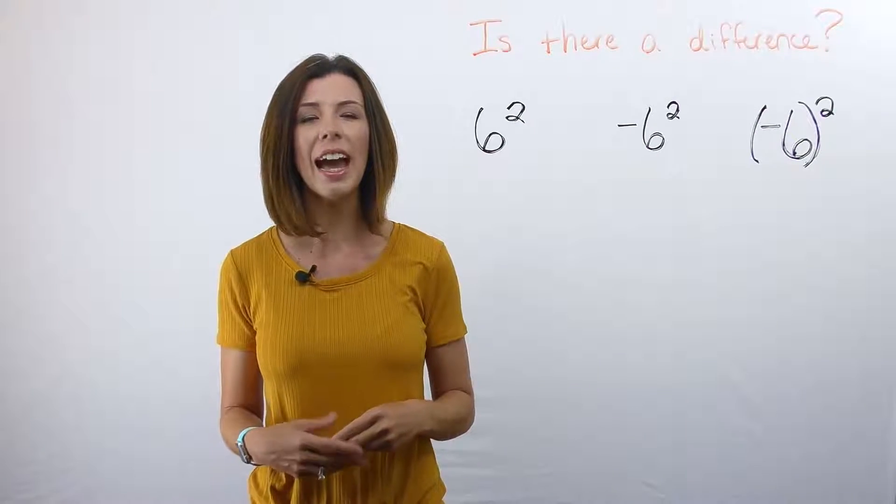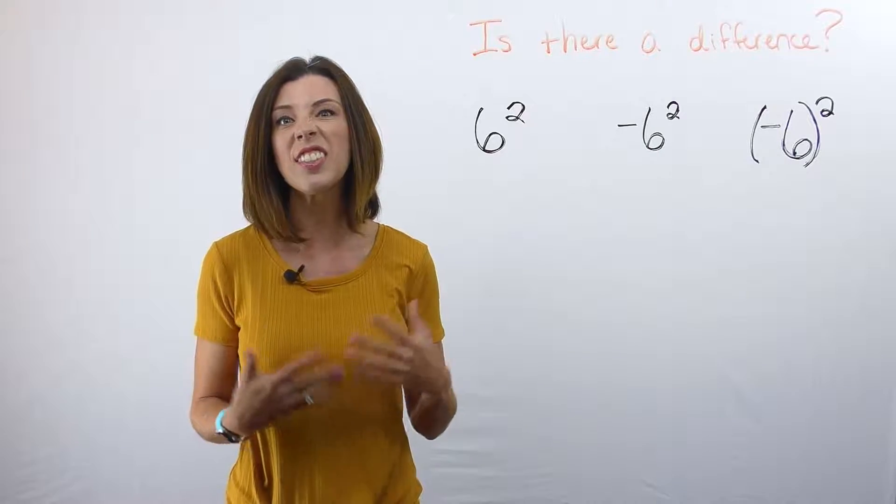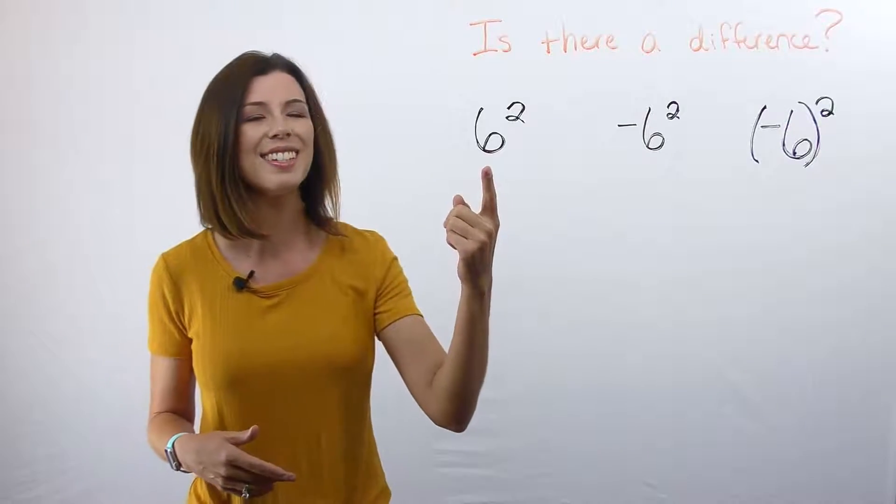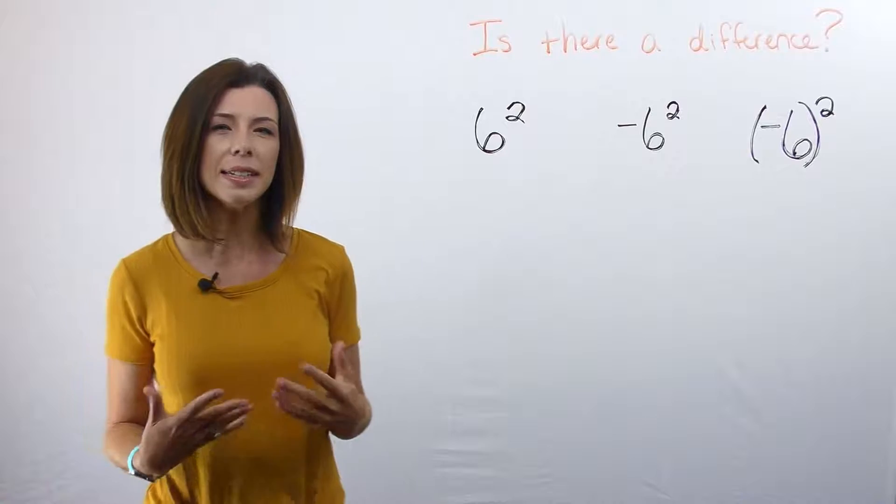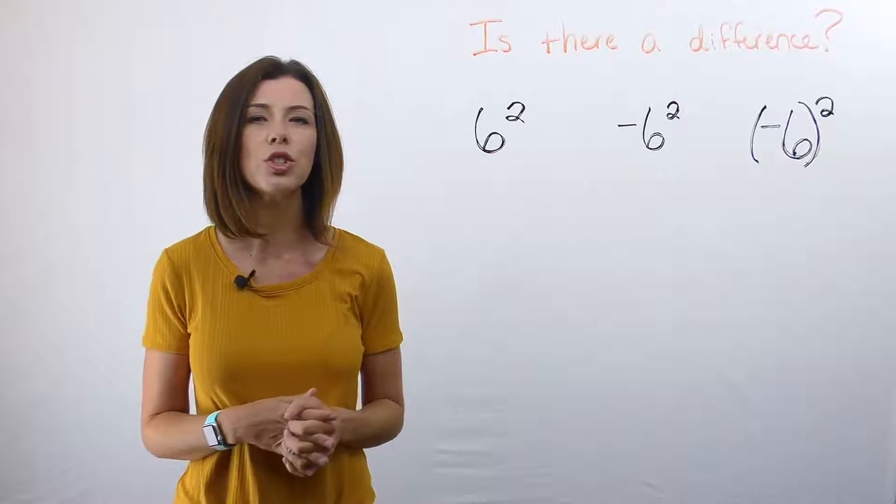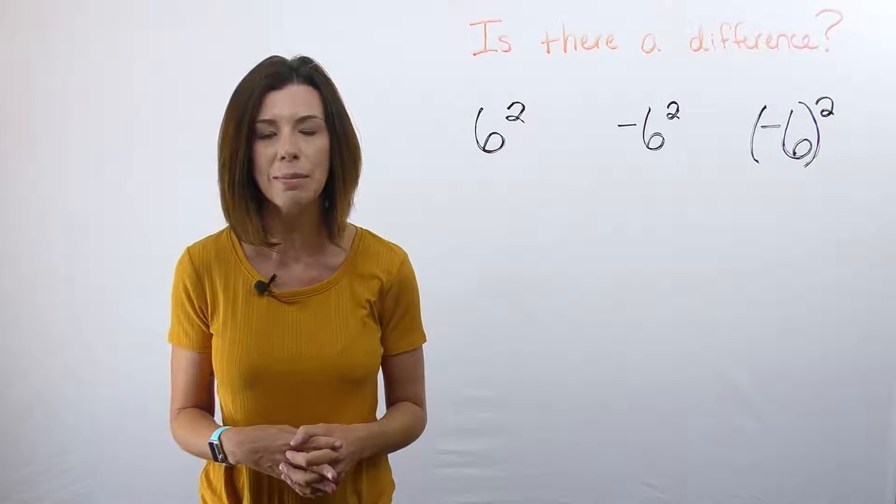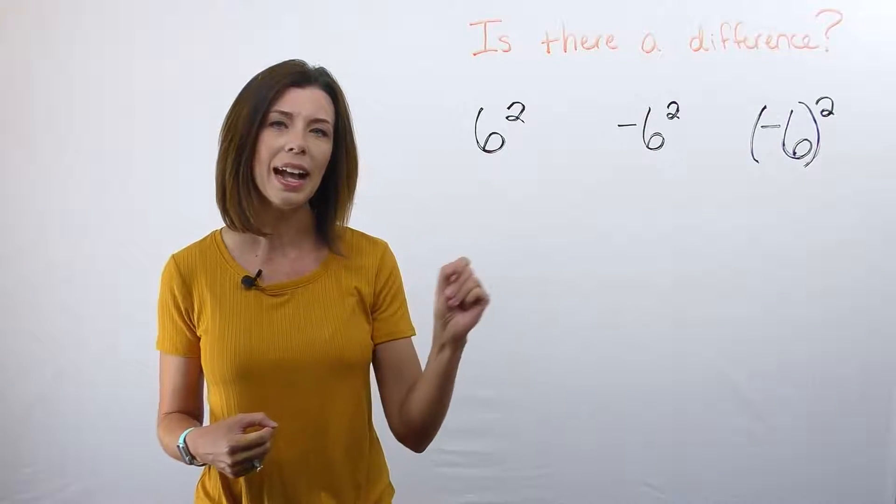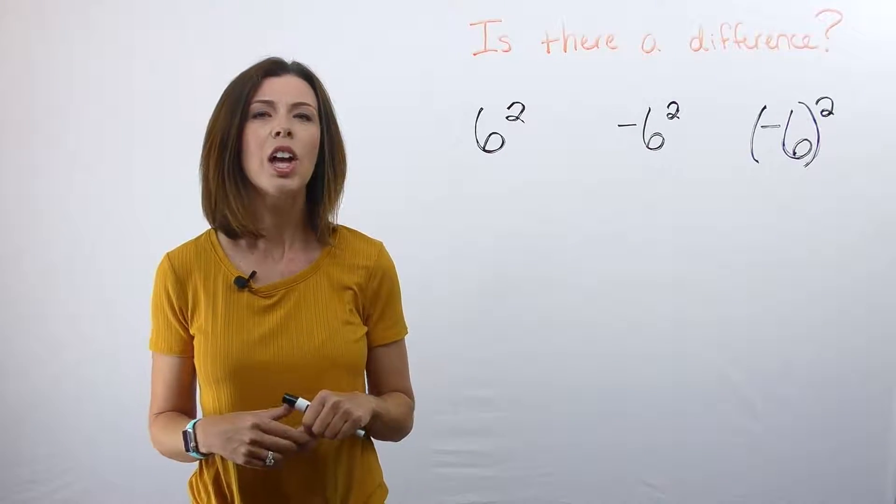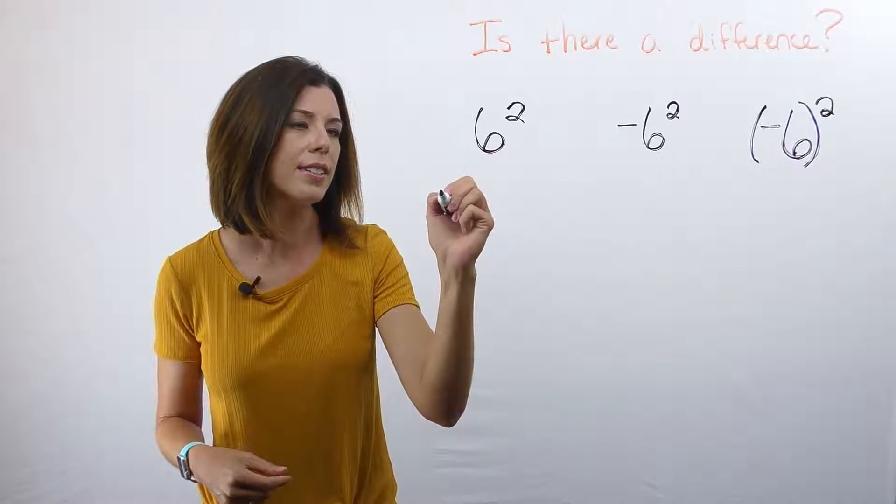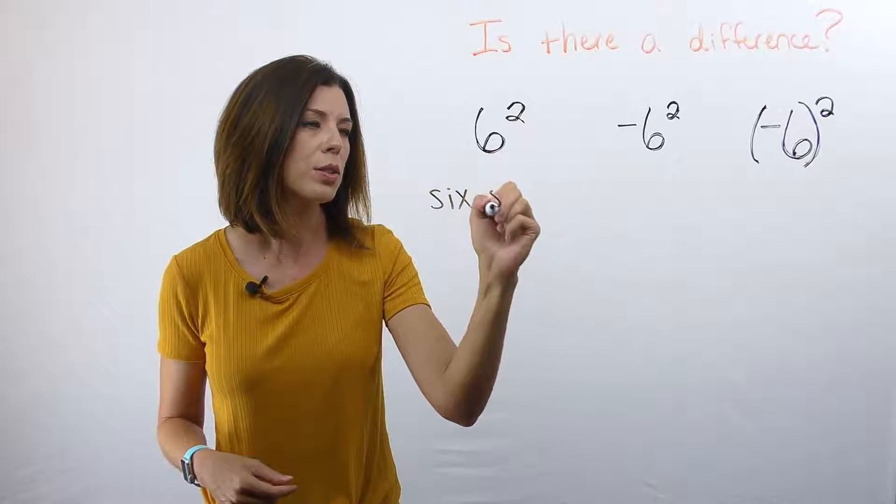Let's first take a look at what most people would consider the easiest one. We've got this 6² here. Let's think about how we would write this in terms of its word name. If I had to ask you to write it out, what would you write? We could think of this as saying six squared.